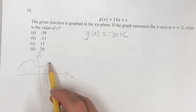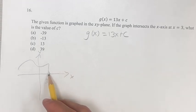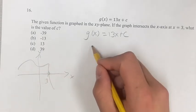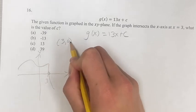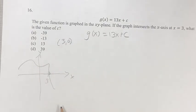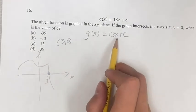So this is telling us that the graph intersects the x-axis at x equals 3. That means this point, (3, 0), is on this graph. Therefore, (3, 0) can be plugged into this function to find c.